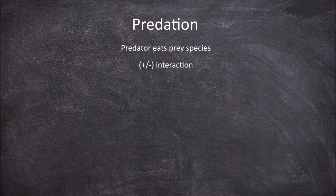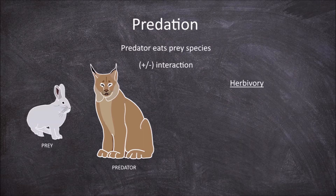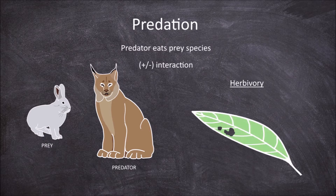An example of predation between animals is seen in the predator the Canada lynx. The Canada lynx predates on mice, birds, and squirrels, but also predates heavily on the snowshoe hare. Herbivory is the form of predation on plants. An example of this is the predation of swan plant leaves by the monarch butterfly caterpillar.